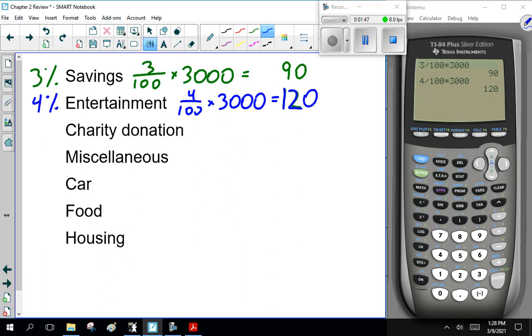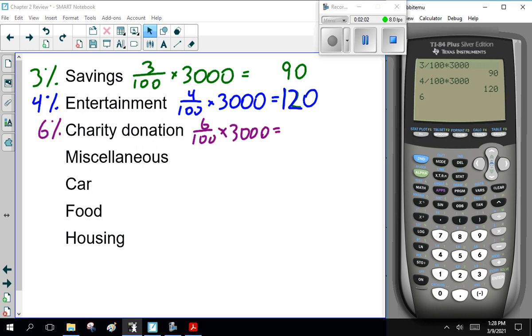Charity? Always good to give whenever you have a little there, 6%. That is 6 over 100 times 3,000, and 3% is $90, 6% is twice that, which is $180.